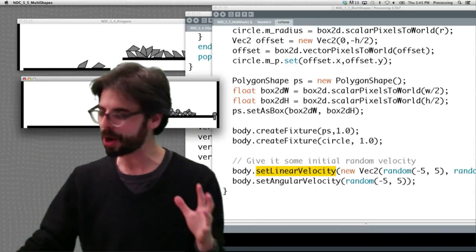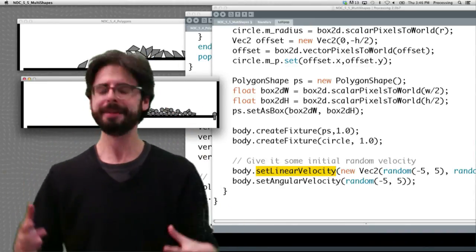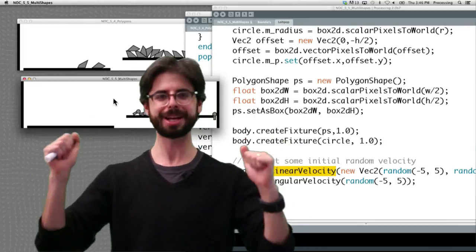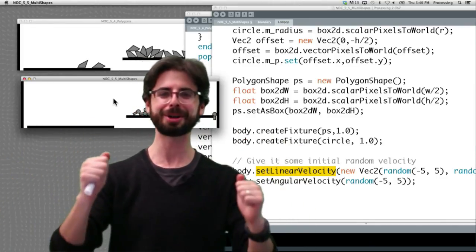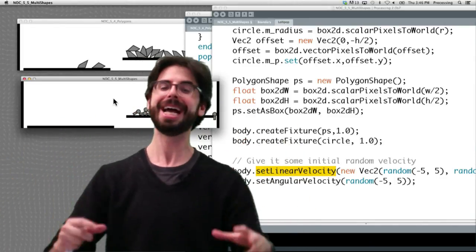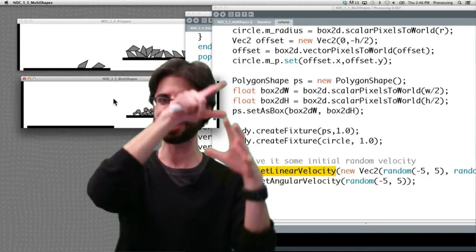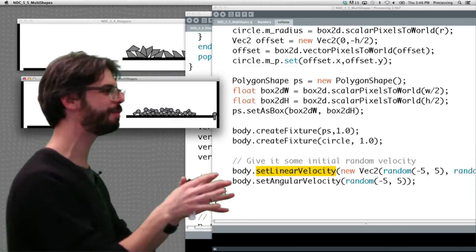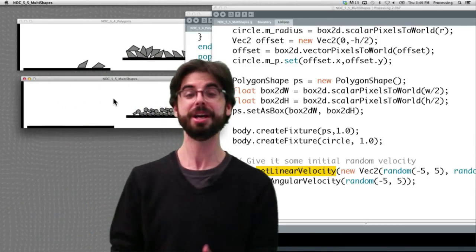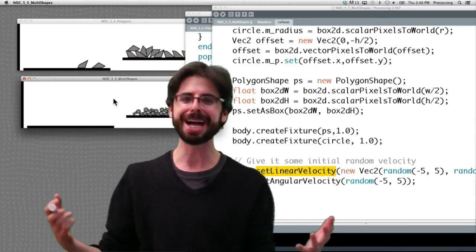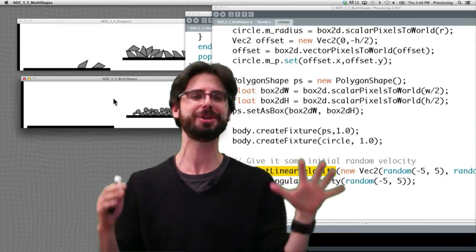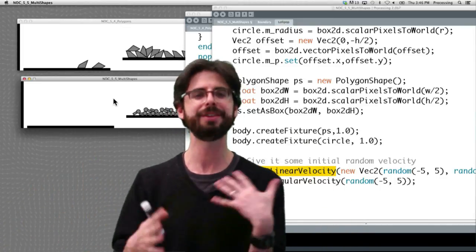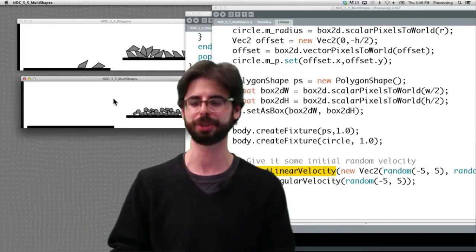Okay, so this is a lot, but hopefully you have a sense of, okay, if I just want a box, polygon shape set as box. If I just want a circle, circle shape with a radius. If I want a more complex shape, I can define a custom polygon, or I can stick multiple shapes together. And these examples 5.4 and 5.5 will kind of lead you down that path. So if you're looking for an exercise, design some kind of crazy alien looking shape that you think you could never make in Box2D, and see if you can build it up with custom polygons and multiple shapes. Okay.